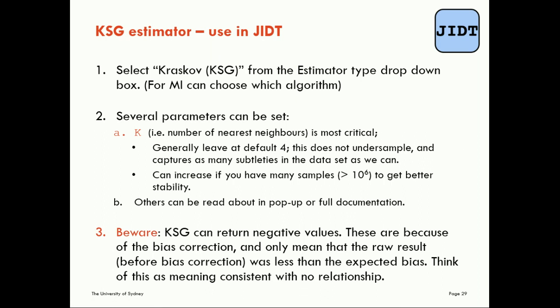The last item I want to point out regarding this estimator is to be aware that it can return negative values. This doesn't mean the values are wrong — it's a frequently asked question. What's happening is that the relationship between the data was estimated as less than what you would expect from the data having no relationship. Because we have bias correction operating on the KSG estimator, when we correct that bias out, sometimes the raw result before bias correction could have been lower than what you would expect on average from having no relationship. A negative value just means it's a value that's consistent with zero.